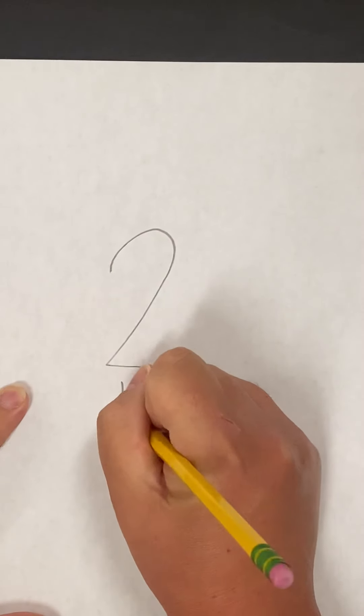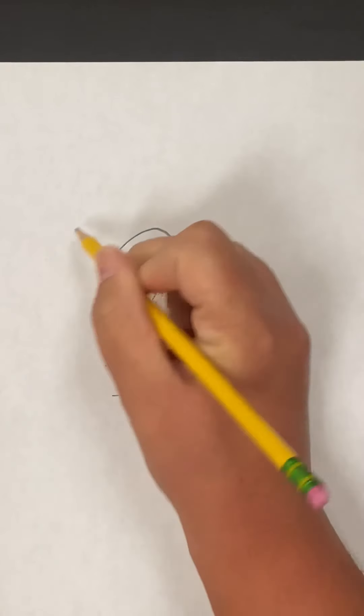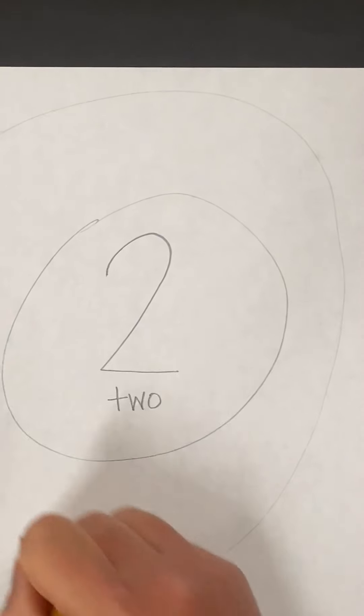And then I'm going to spell it. Two is T-W-O. That's how you spell the number two. Circle around that. Circle around there.